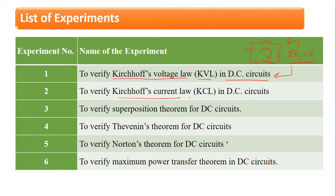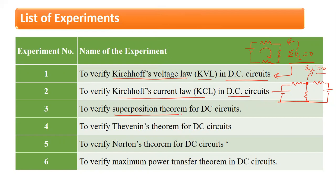Similarly, KCL is also verified. It states that in any given network, the net current at a junction is zero — summation of i is zero. This is what KCL states, and this will also be verified practically in this lab. Along with these two basic laws, we also perform experiments related to the theorems and verify them practically.